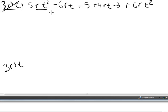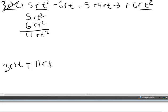So we've got 5r squared and 6rt squared, which is going to give us 11rt squared. Plus 11rt squared. Cross them off our list.